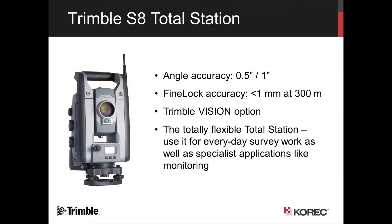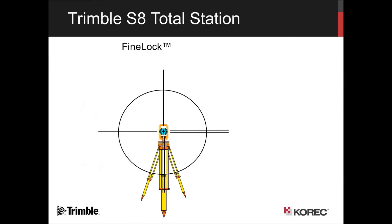Just a quick look at the sensors. This is the Trimble S8 total station — the power monitoring total station. It's the same chassis as all of our robotic range, the S3, S6, S8. The S8 is a more accurate version and comes complete with fine lock for accuracy. Guaranteed accuracy of one millimeter when your object is within 300 meters, but it has an eventual range of two and a half kilometers. It also has Trimble Vision — a calibrated metric imaging camera built in.